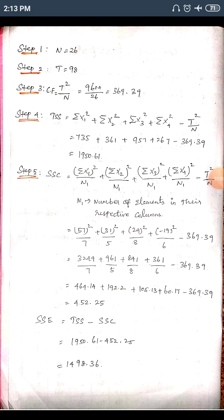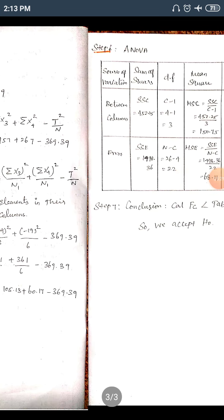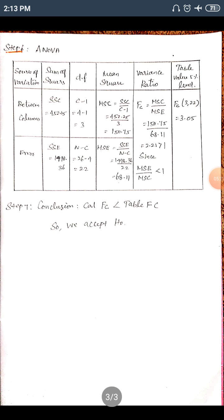Step 6: Sum of Squares of Error (SSE). The formula is SSE = TSS − SSC. Subtracting SSC from TSS gives SSE = 1498.36. Now we proceed to build the ANOVA table.